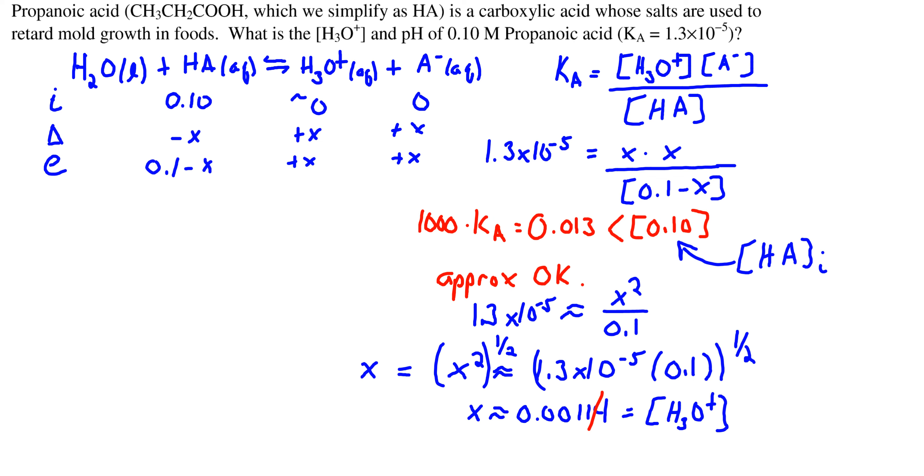We've solved for x, which is, as we see from our ICE table, the value of hydronium ion concentration, so now we simply need to calculate the pH. We take the negative log of H3O+ ion concentration and we get our final answer: pH is 2.94.